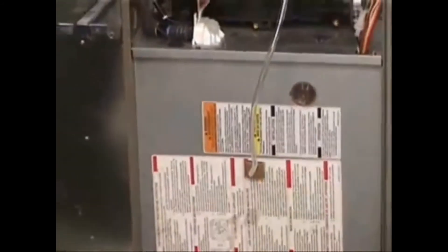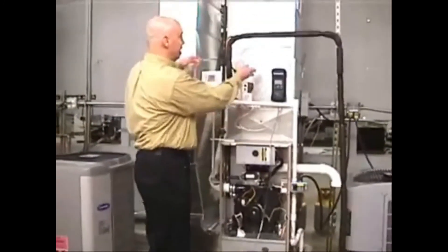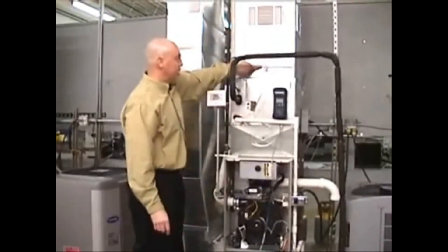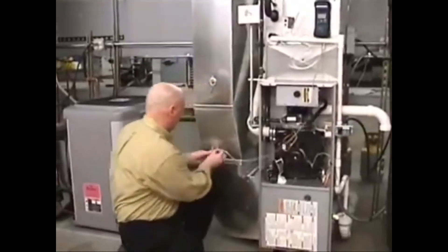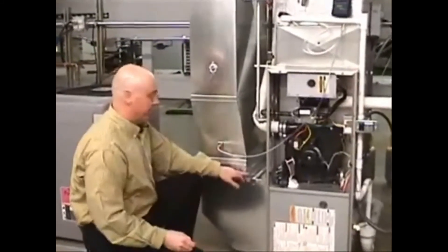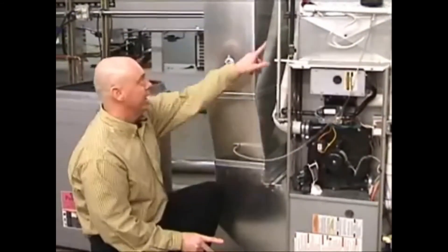But what guys tend to do out in the field is they tend to go to the easier locations. They tend to be on the outlet side of the coil up here in the plenum area, and then they tend to take their other probe and be in the return air drop area.